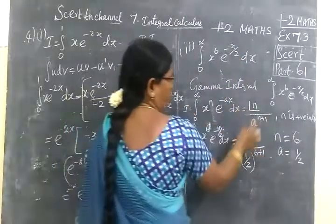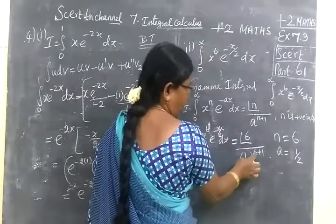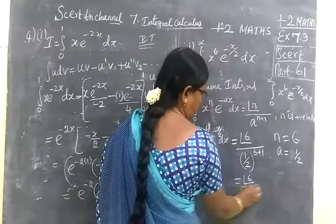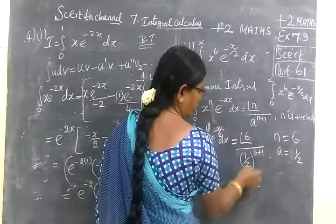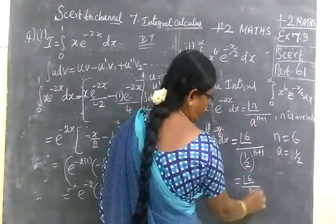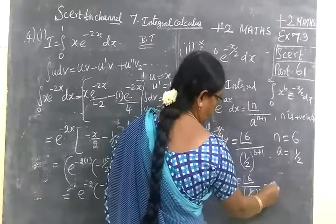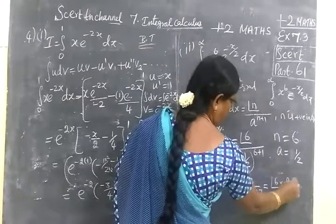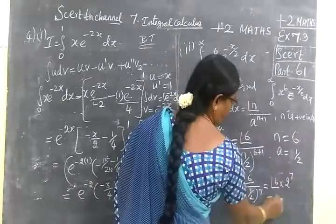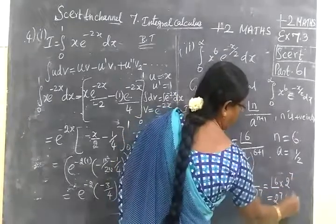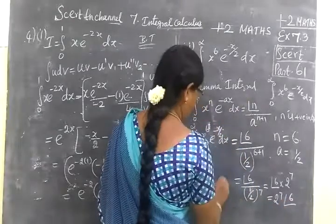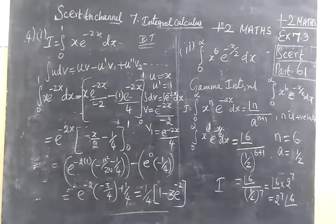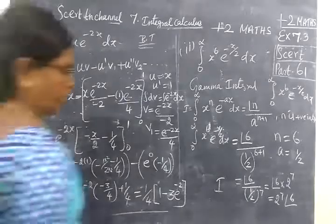So factorial 6 divided by 1 by 2 to the power 7. The reciprocal is 2 power 7 times factorial 6. That is 2 power 7 times factorial 6.